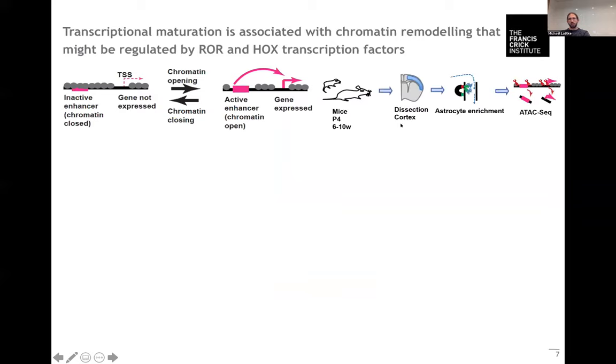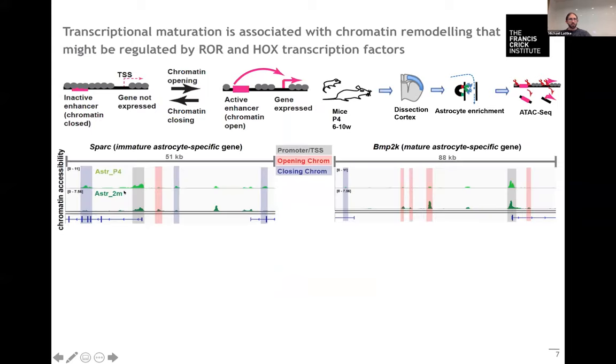We did this again on purified astrocytes from early postnatal and adult brain, using ATAC-seq, which uses transposases to cut DNA which is not bound to nucleosomes, so open chromatin. With this we get these accessibility profiles, and what you can see here is that the accessibility of these regulatory elements around the genes correlates very well with the changes in gene expression.